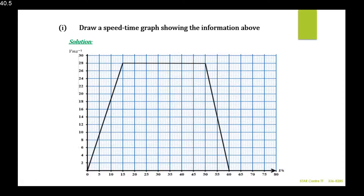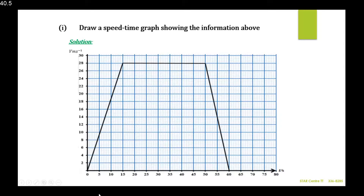The car continues to travel at this speed for another 35 seconds, maintaining 28 meters per second — so it's a flat line during this time. After reaching 15 seconds, 35 seconds further brings us to 50 seconds. So that flat line goes from 15 to 50 on the x-axis.